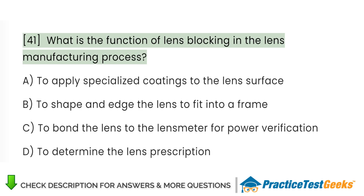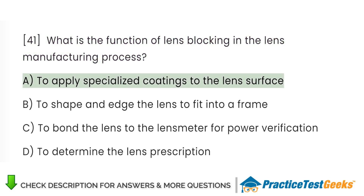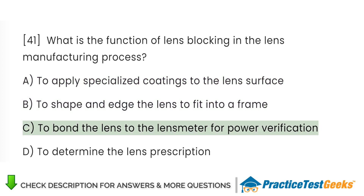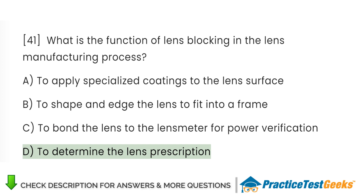What is the function of lens blocking in the lens manufacturing process? A. To apply specialized coatings to the lens surface. B. To shape and edge the lens to fit into a frame. C. To bond the lens to the lens meter for power verification. D. To determine the lens prescription.